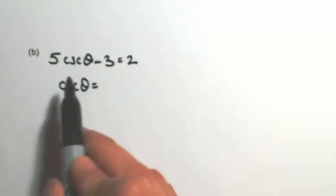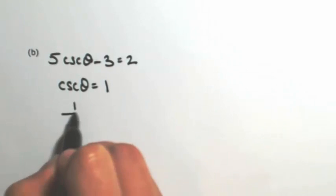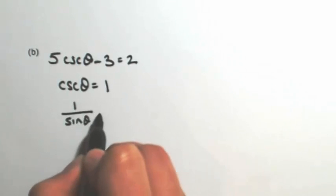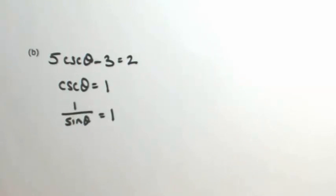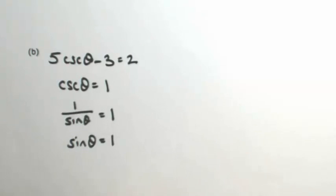Adding 3, I get 5 divided by 5 and I get 1. So this is cosecant of theta. It might be a little bit easier to think of this as the reciprocal of sine. So I'm looking for where the reciprocal of sine of theta is 1 - in other words, where sine of theta is 1.